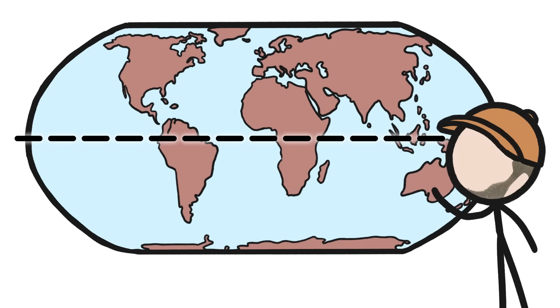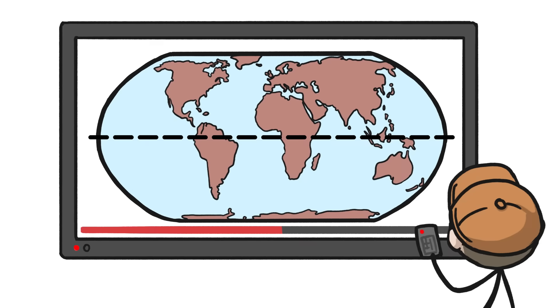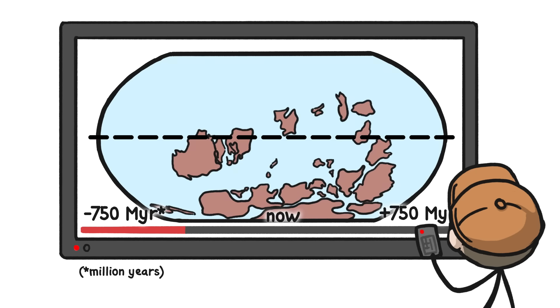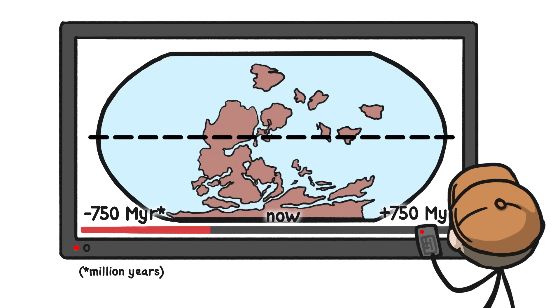The actual reason there's so much land in the northern hemisphere is that we're basically looking at a random screenshot from a very long, very slow geological movie. In fact, it's just as likely that another screenshot would show most of the land in the south, or the east, or the west.